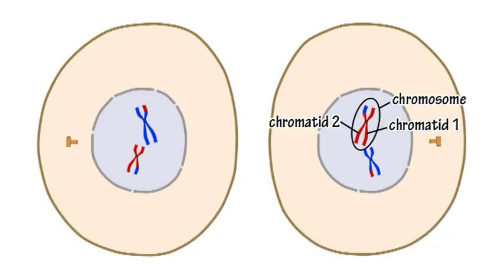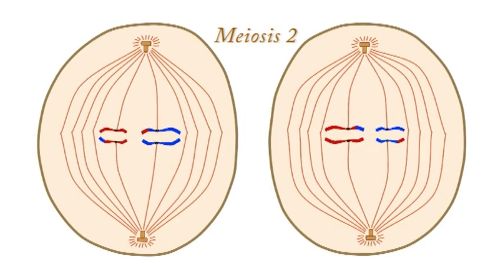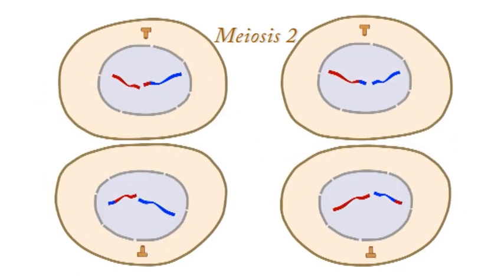Each of these chromosomes is made up of two chromatids. In meiosis 2, these chromatids are separated in a second process of nuclear division that is similar to mitosis.